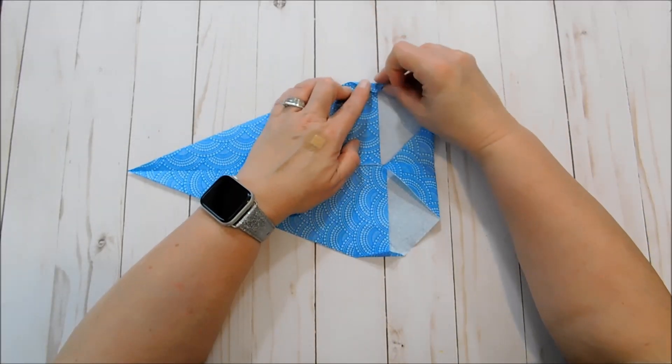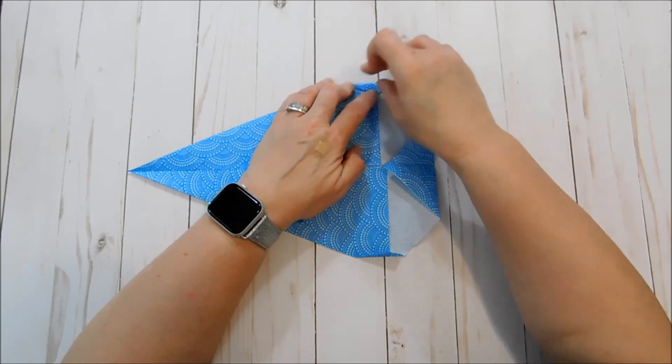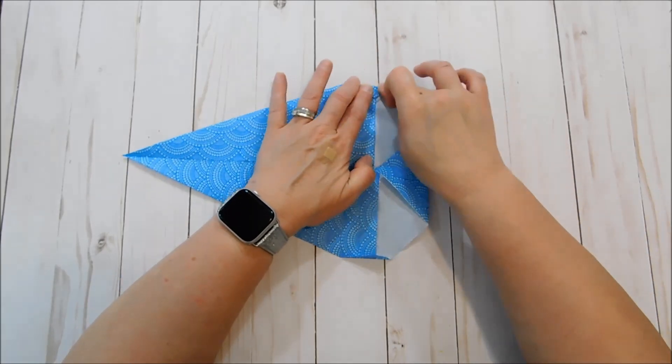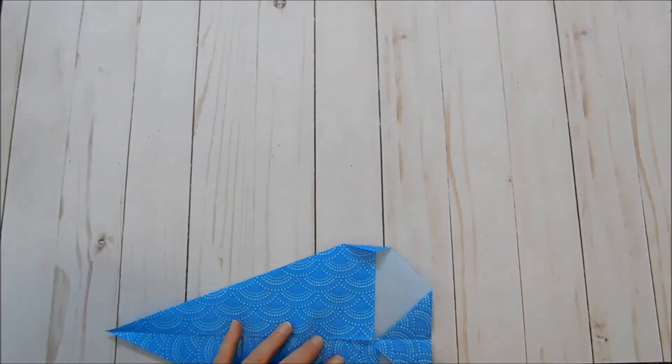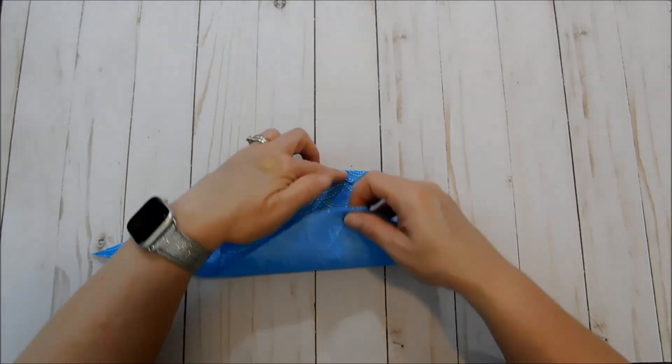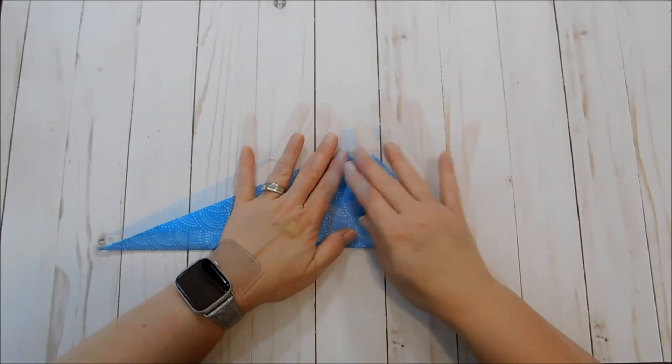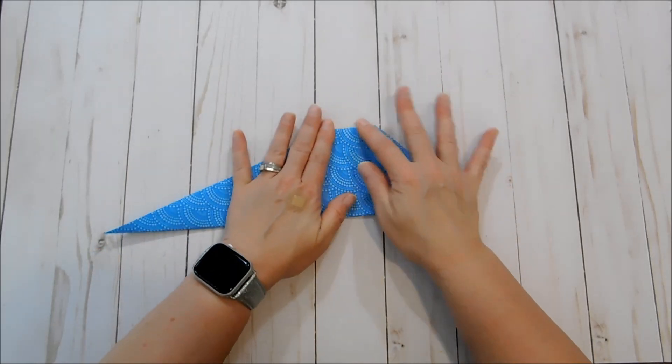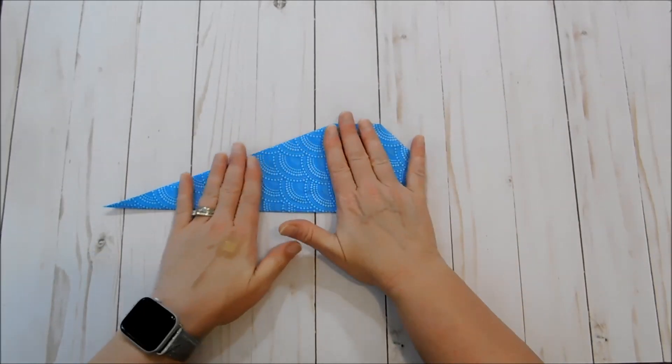Just fold that about a half inch. Same here. It doesn't really matter if they match up exactly just as long as you don't have one peeking out from behind the other when it's all finished. And that gives him a little flat spot on top of his head.